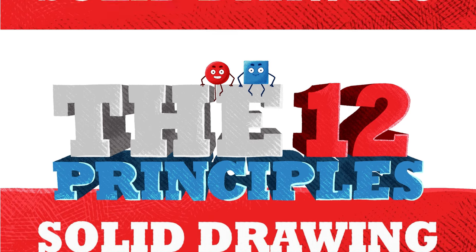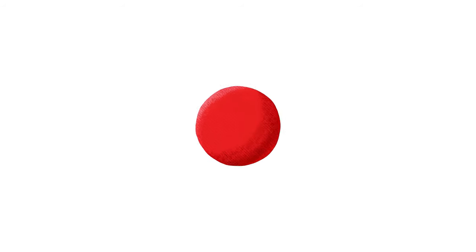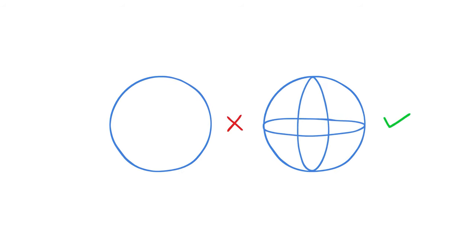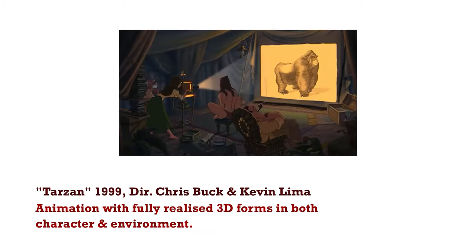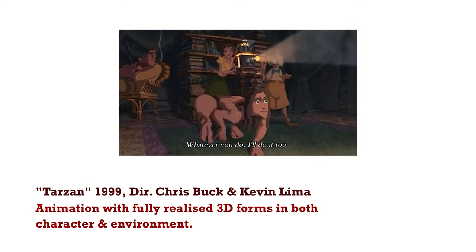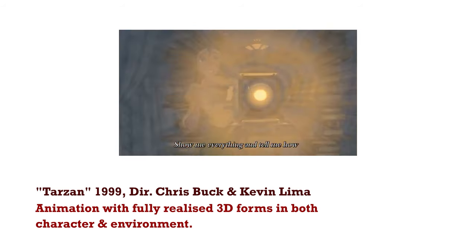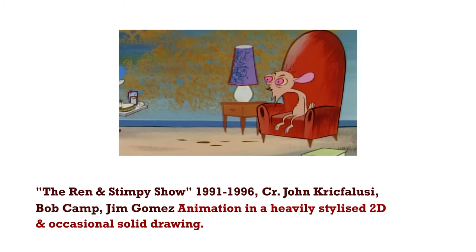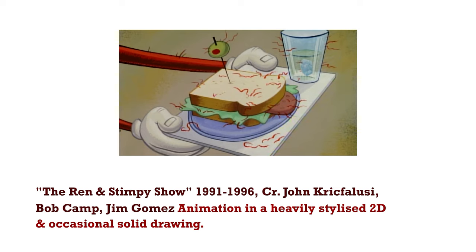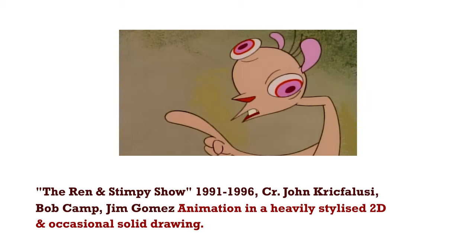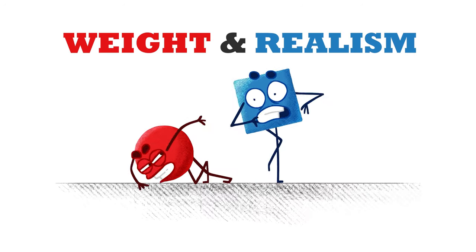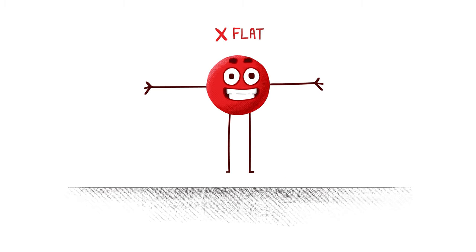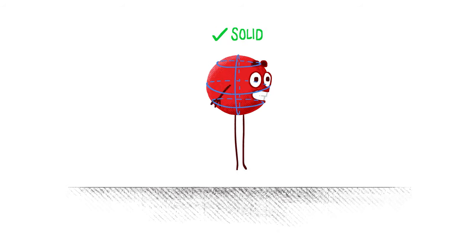Next up is solid drawing. Solid drawing is the practice of drawing your animations as if they have 3D volume, in order to lend a greater sense of weight, balance and realism to their movements. It's probably important to remind you that these are Disney's principles of animation, and if your style leans towards a heavily stylised 2D, then obviously this principle will be less important. But even in a 2D stylised animation, it helps to know how to draw your characters with volume from any angle. Solid drawing helps add weight and realism to your animation. When our red character turns around, his face doesn't move across his body like a flat circle, but instead curves around it as if it were a sphere.